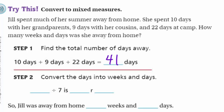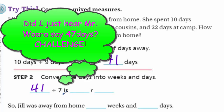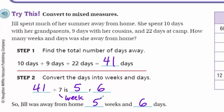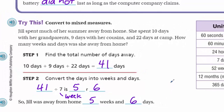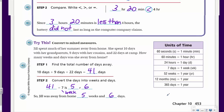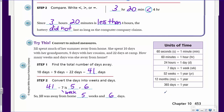Step two: convert the days into weeks and days. We can divide by 7 because there are 7 days in one week. 41 days divided by 7 - we'd have 5 weeks, which is 35, leaving 6 days left over. So Jill was away from home for 5 weeks and 6 days. We divided because we went from a smaller unit - days - to a larger unit - weeks.